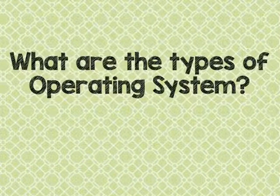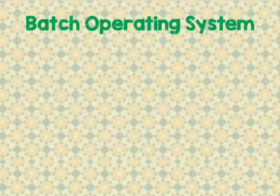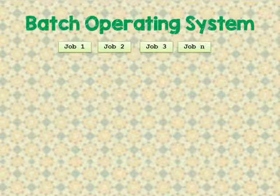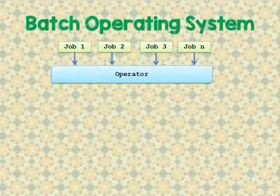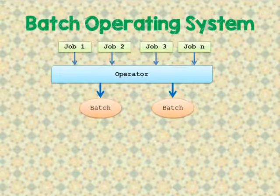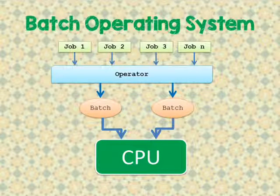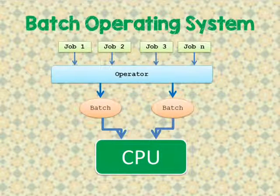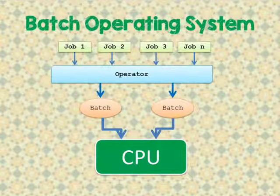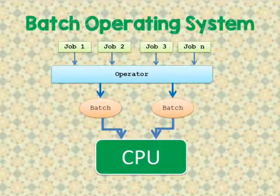What are the types of Operating System? Batch Operating System: The users of a Batch Operating System do not interact with the computer directly. Each user prepares their job on an offline device like punch cards and submits it to the computer operator. To speed up processing, jobs with similar needs are batched together and run as a group. The problems with batch systems include lack of interaction between the user and job, CPU is often idle because the speed of mechanical I/O devices is slower than the CPU, and it is difficult to provide the desired priority.